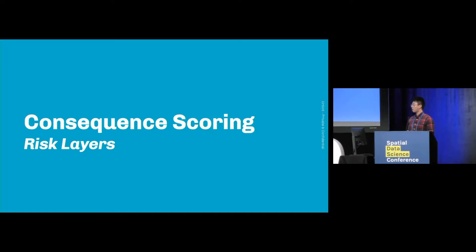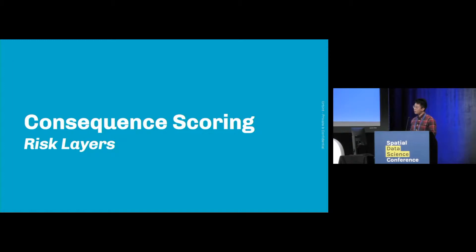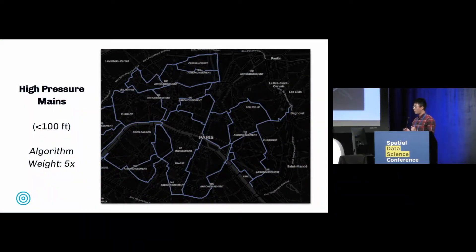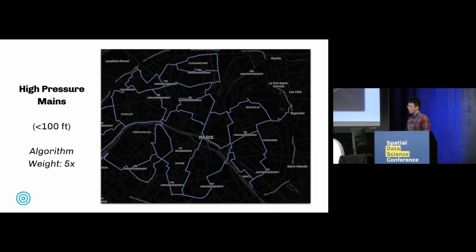When we think about consequence scoring, we think in terms of risk layers. A risk layer is defined as a place or object that when damaged can result in loss of life as well as severely jeopardize the city's ability to operate and respond to emergency events — things like gas pipes, major transportation hubs, police stations, fire stations, and difficult-to-evacuate locations like schools and hospitals. We took a sample of all the possible risk layers, loaded them into our maps, created a buffer around the geometry based on domain knowledge, and then assigned a weight to each risk layer.